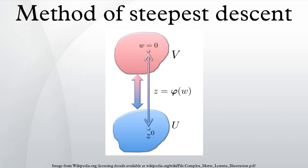Extensions and generalizations: an extension of the steepest descent method is the so-called nonlinear stationary phase steepest descent method. Here, instead of integrals, one needs to evaluate asymptotically solutions of Riemann–Hilbert factorization problems. Given a contour C in the complex sphere, a function F defined on that contour, and a special point — say infinity — one seeks a function M holomorphic away from the contour C, with prescribed jump across C and with a given normalization at infinity. If F and hence M are matrices rather than scalars, this is a problem that in general does not admit an explicit solution, and an asymptotic evaluation is then possible along the lines of the linear stationary phase steepest descent method. The idea is to reduce asymptotically the solution of the given Riemann–Hilbert problem to that of a simpler, explicitly solvable Riemann–Hilbert problem.